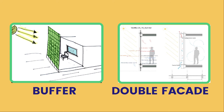There are two other ways to buffer and double-façade your building. A buffer is a planted element or shading element that sits in front of your building, whereas a double façade is a second skin clipped onto an existing building, which acts as a shading device.